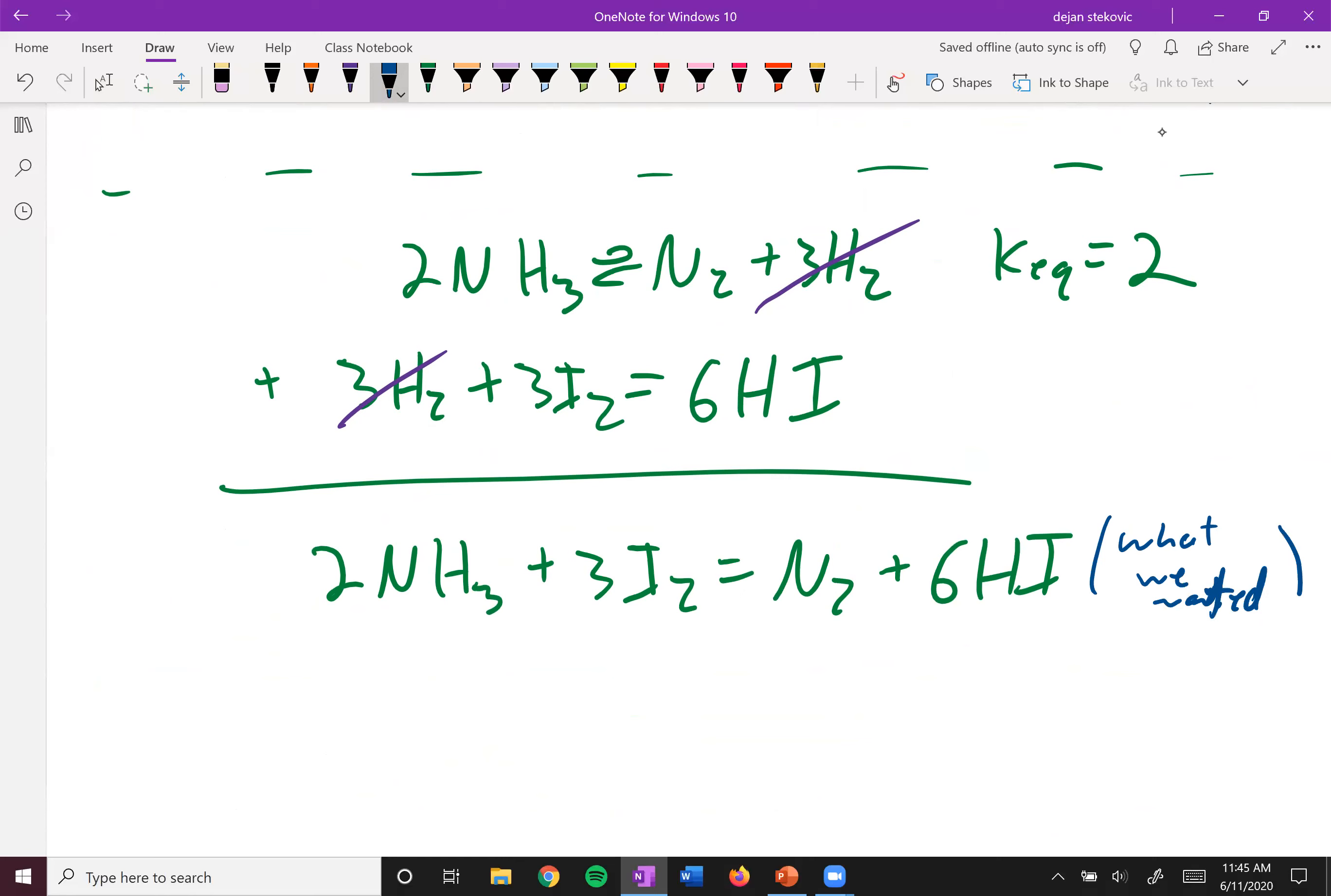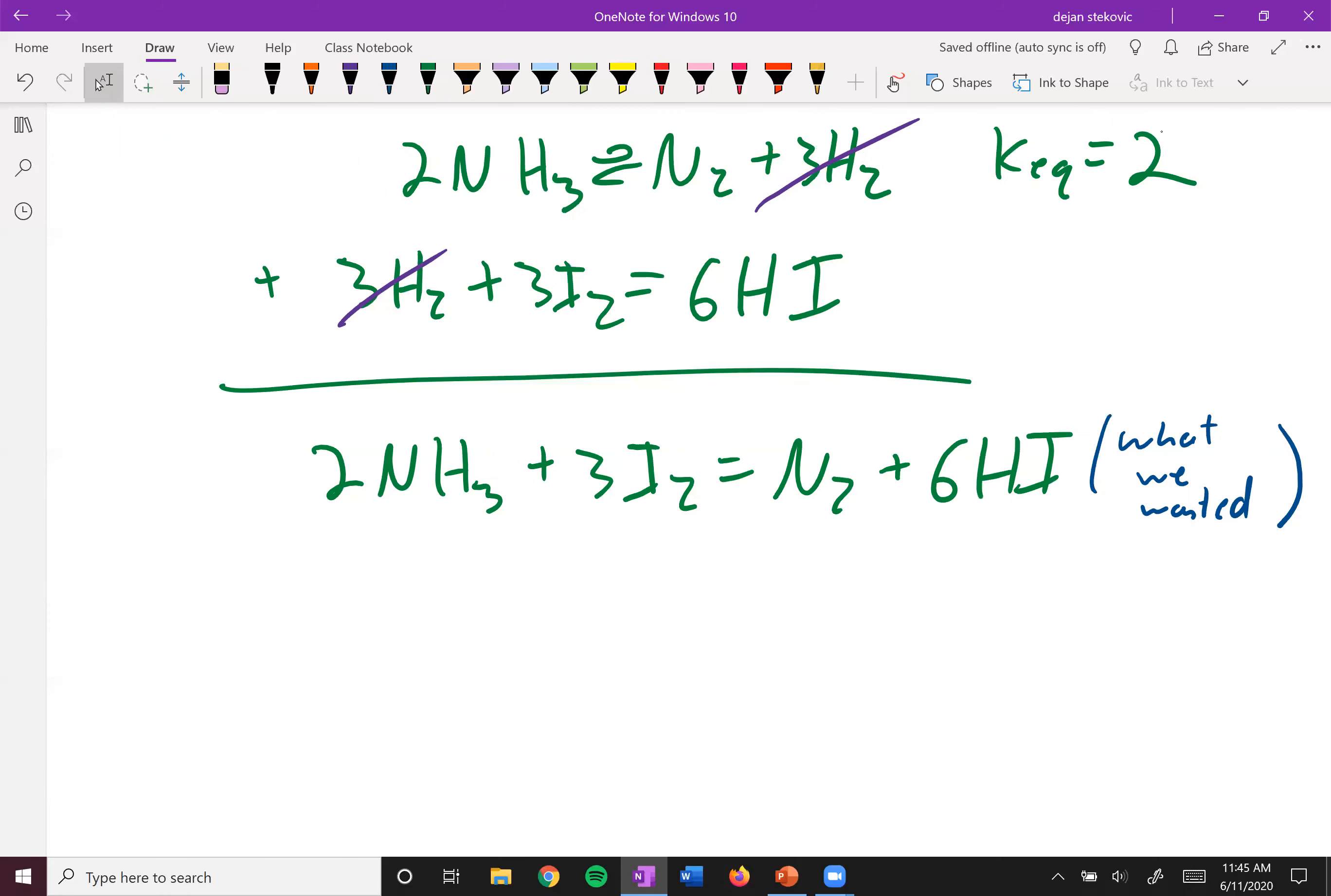You always want to do this step because it's not always going to be kind of this simple of a problem. So we just sum the reactions. We have to think about what we're going to do to the Ks. And so when you sum reactions, you multiply the Ks.